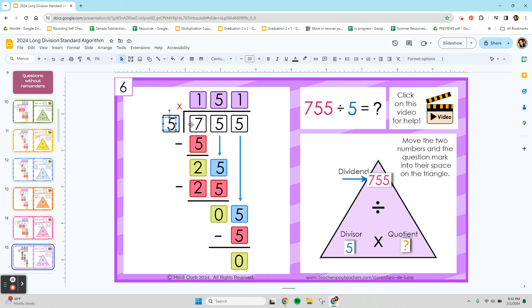So 151 times 5 is 755. And 755 divided by 5 is 151, which is our quotient.